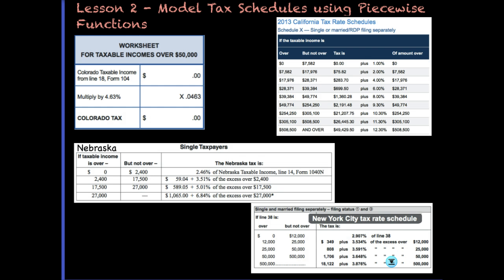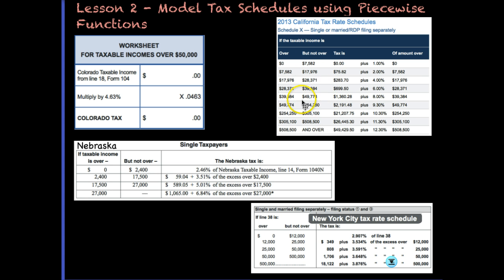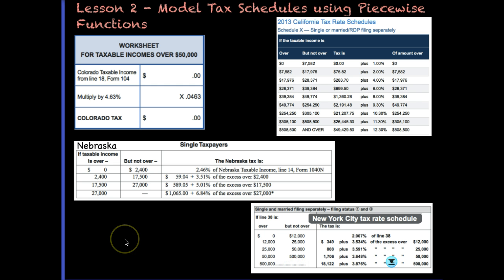Let's look at some different state rates. Colorado has a flat tax of 4.63%. There was a bill in 2013 to change it to a graduated structure like the federal tax, but that failed. Nebraska has four different intervals; their highest bracket is 6.84% but some income is taxed as low as 2.46%. California has more tax brackets than the federal government — highest is 12.3%, lowest is 1%. New York ranges from 2.9% to 3.8% with about five brackets.